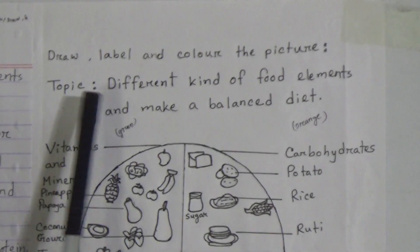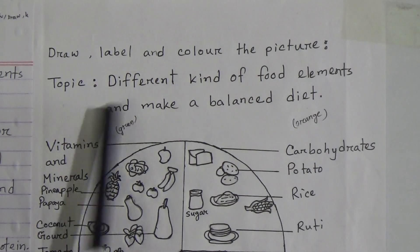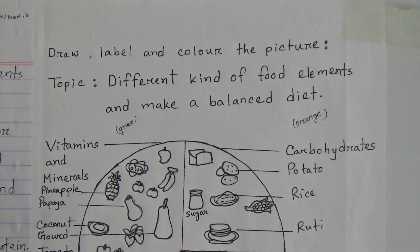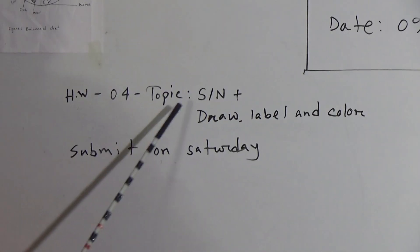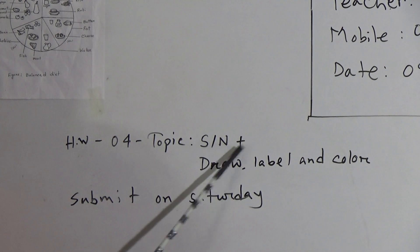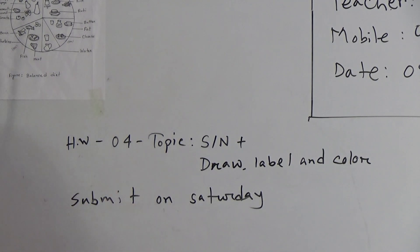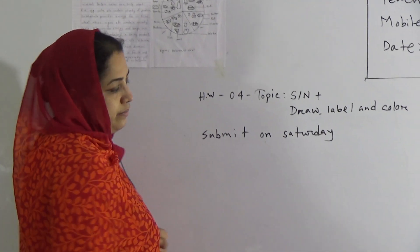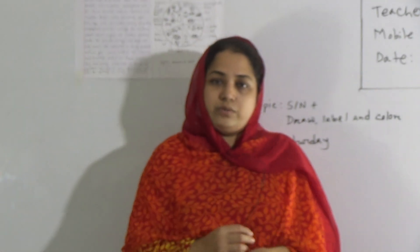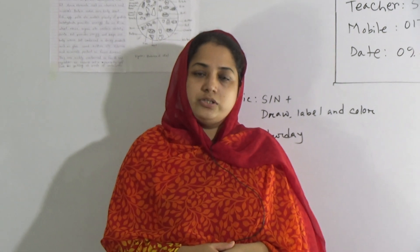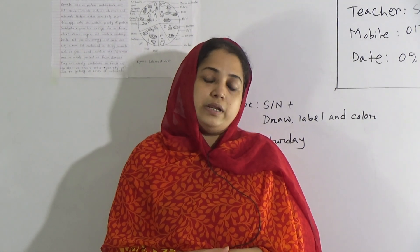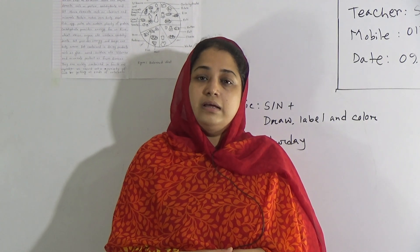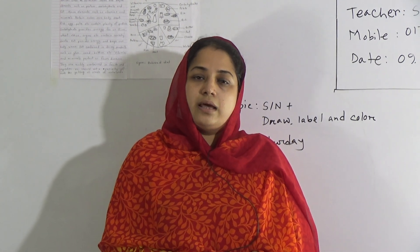You have to write the topic name: 'Different Kinds of Food Elements and Make a Balanced Diet.' Now I am giving you your homework. Your homework number is four and the topic is short note and draw, label, and color the picture. You have to do this homework and submit it on Saturday. I hope all of you have understood our today's topic properly. Memorize the short note on nutrition of food and practice draw, label, and color the picture at home. See you again in the next class. Allah Hafiz.